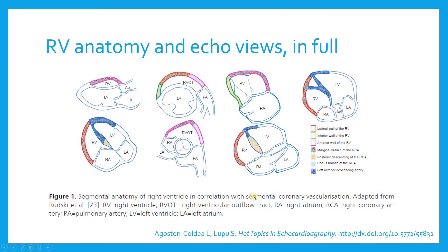To wrap up anatomy: I want to thank the authors of the last two articles that made their work open access and the images freely shareable — it makes making recordings like this much easier. Looking at the RV from the long axis view, you're mostly seeing the anterior wall. Any apical four-chamber view gives you mostly the lateral free wall. Your inflow view lets you pick up the inferior wall. And the outflow tract view is mostly the anterior wall — which we talked about before.